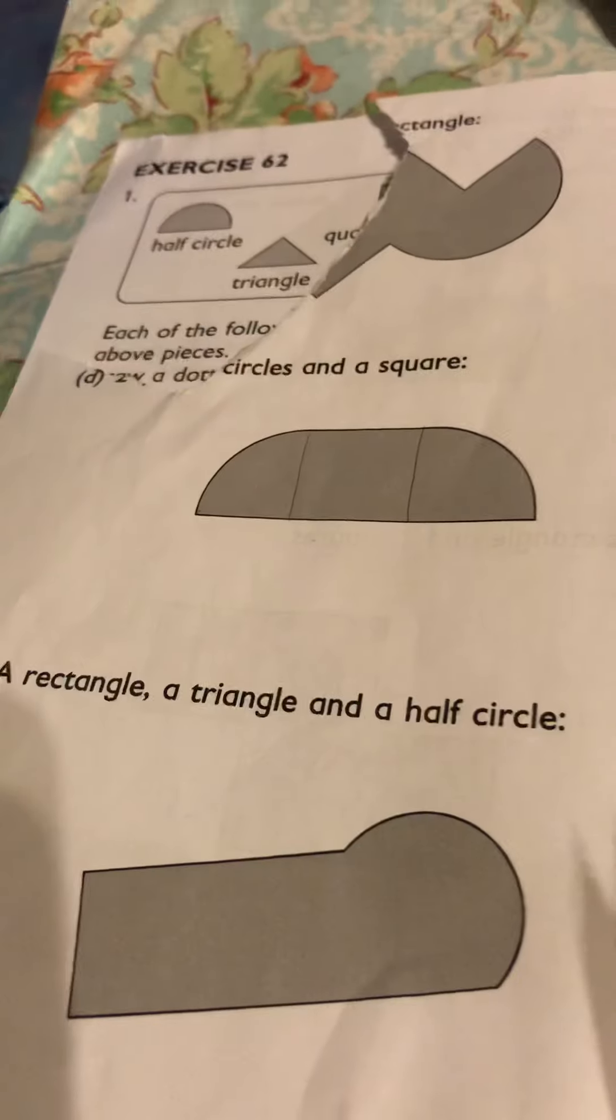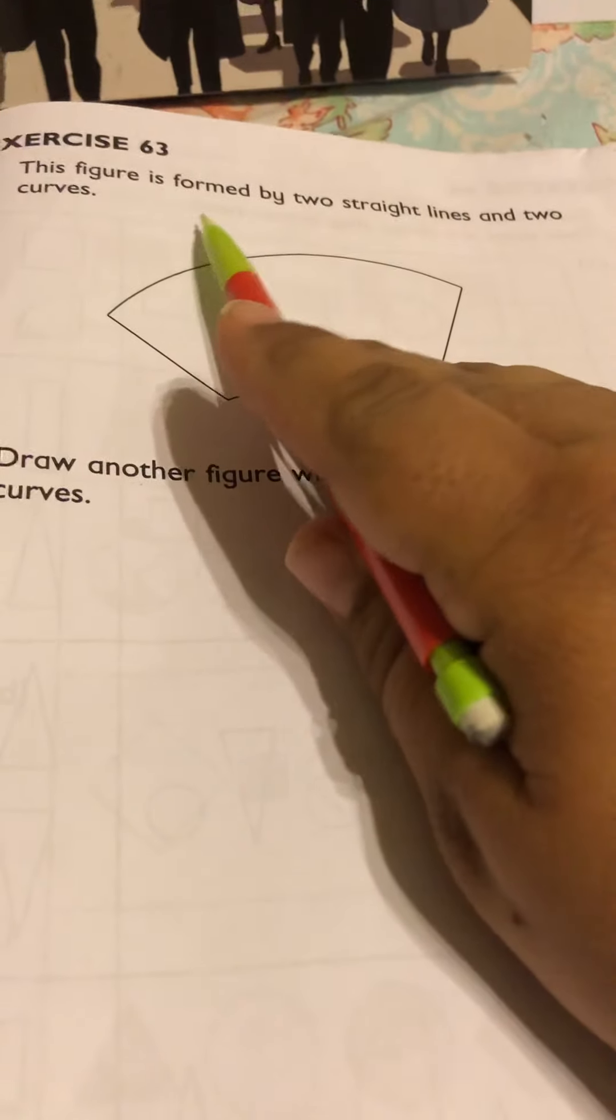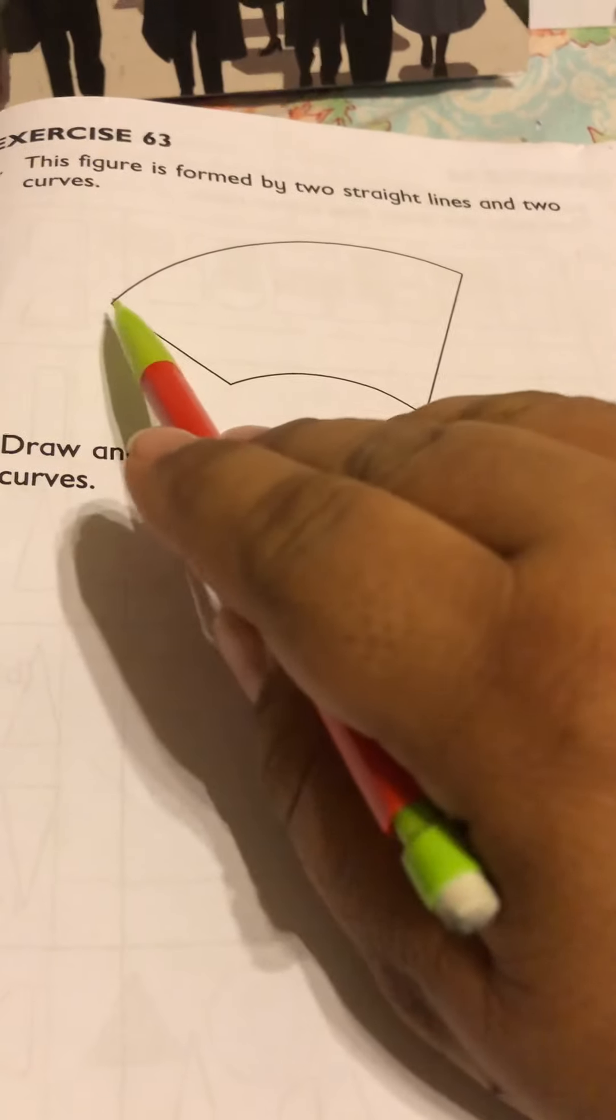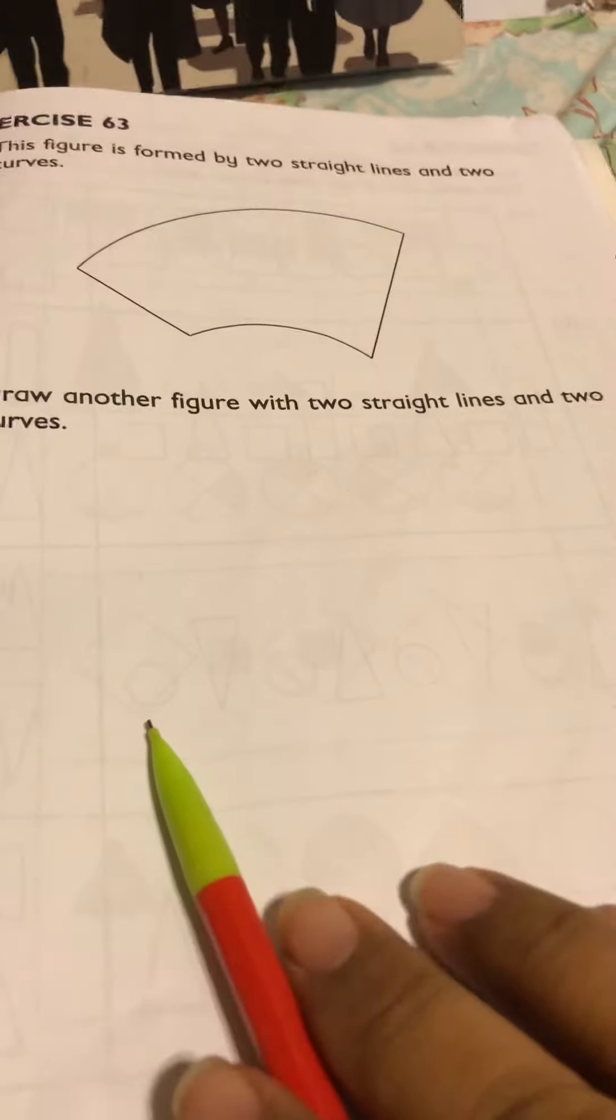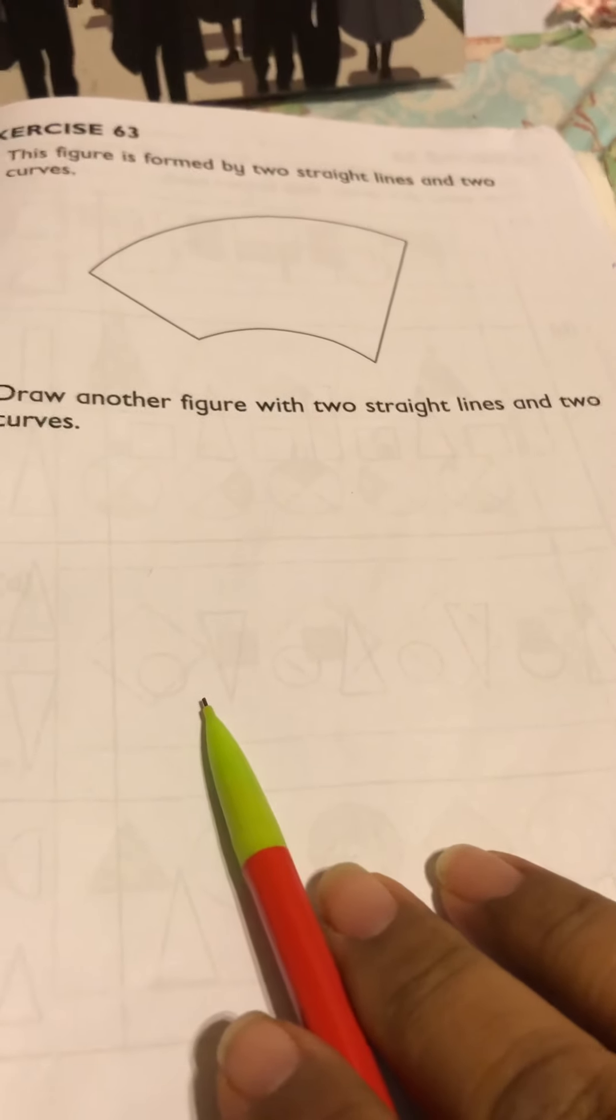See if you can do the rest on your own. And then number 63 is very simple. All they're asking or telling you here is this is a figure that has two straight lines and it has two curved lines. Now can you make a shape using two straight lines and two curved lines.